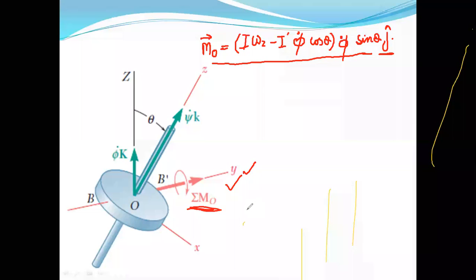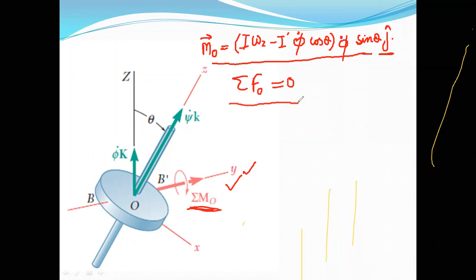This equation can be more easily understood if we recall that the summation of all the forces acting on the gyroscope at point O is equal to zero. The reason is simple: the gyroscope is not translating along the x-axis, y-axis, or z-axis. When the gyroscope does not have any translational motion, the summation of all forces about every axis must be equal to zero.